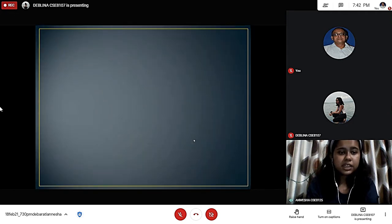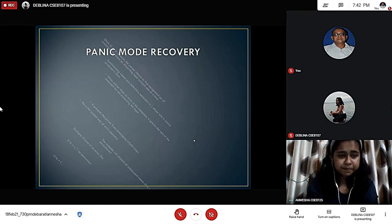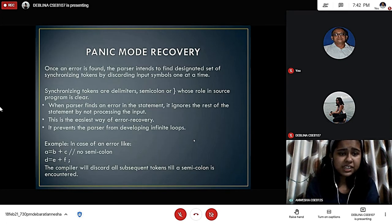First, panic mode recovery. Once an error is found, the parser intends to find designated set of synchronizing tokens by discarding input symbols one at a time. Synchronizing tokens are delimiters like semicolons whose role in source program is clear. When parser finds an error in the statement, it ignores the rest of the statement by not processing the input. This is the easiest way of error recovery and prevents the parser from developing infinite loops.